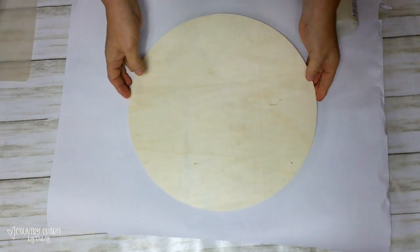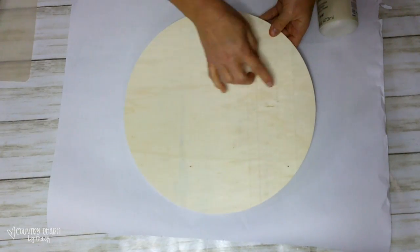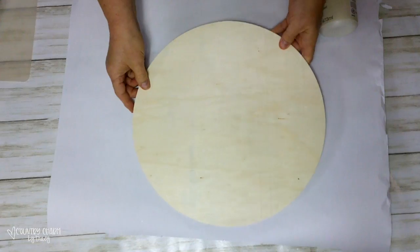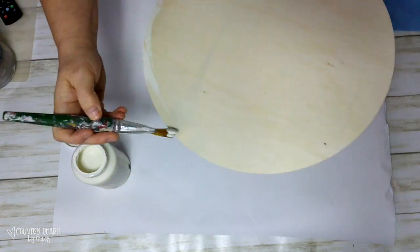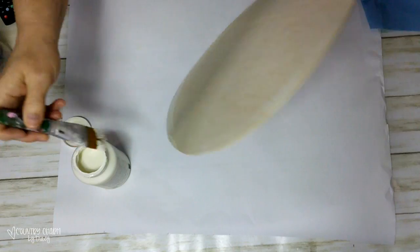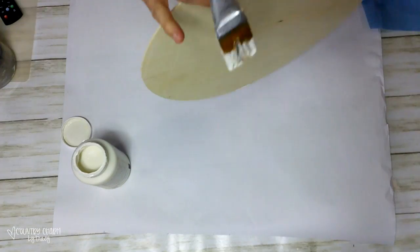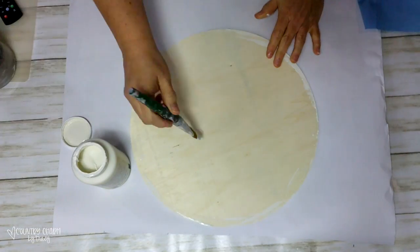I'm starting with a 14 inch wood circle from Hobby Lobby and I gave it a coat of the plaster color chalk paint. This is just what I had on hand and what I decided to use because I wanted a more creamy off-white color.